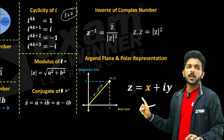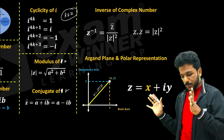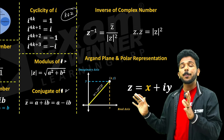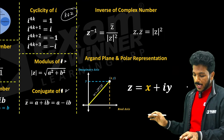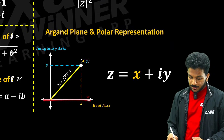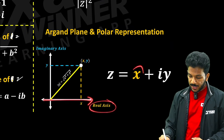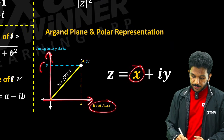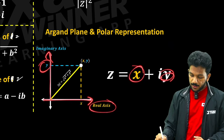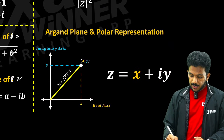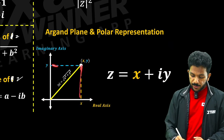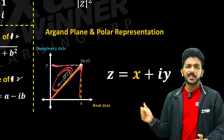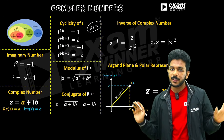I will represent this on the Argand plane. In the x-axis, we have the real part; in the y-axis, we have the imaginary part. Then a plus ib is plotted as the point (a, b). This is the first chapter on complex numbers — it's very simple.